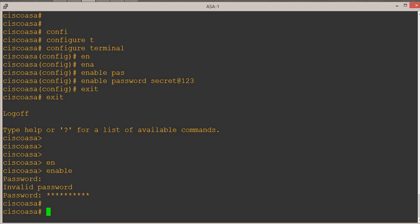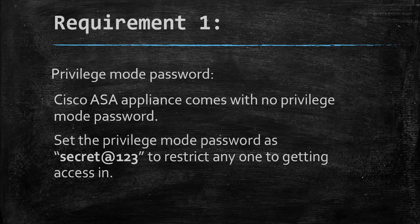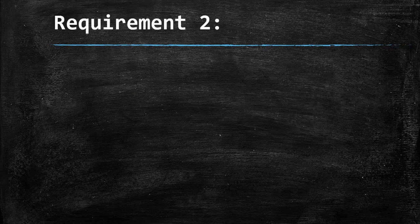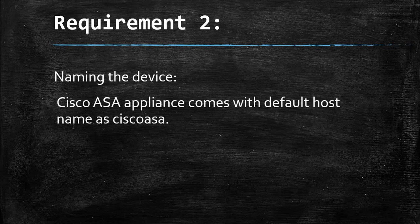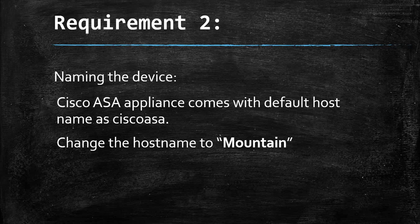Now let's check the other requirement. Requirement 2 says we have to name our device. By default, when the ASA comes out of the box, it has the plain name 'ciscoasa'. As per our requirement, we have to change the name to 'mountain'.